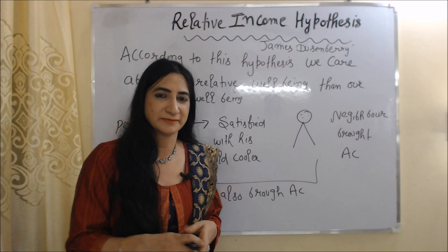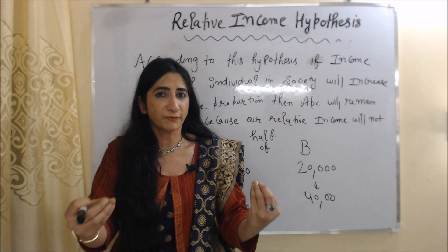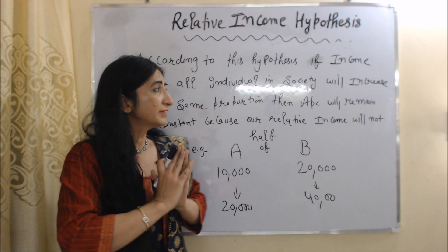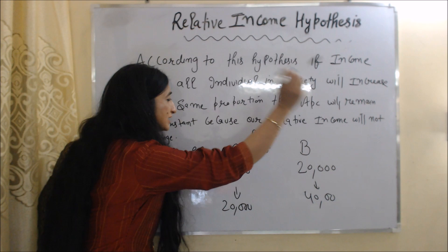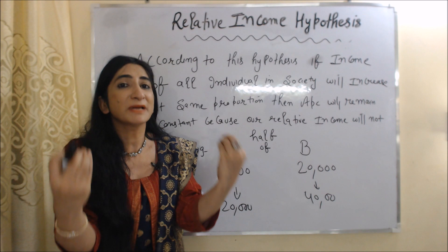According to the absolute income hypothesis, when our income increases, our APC will fall — meaning our consumption will increase by less than our income. But according to the relative income hypothesis, if the income of all individuals in society increases at the same proportion, then APC will remain constant and will not fall. Our spending will not fall because our relative income will not change.